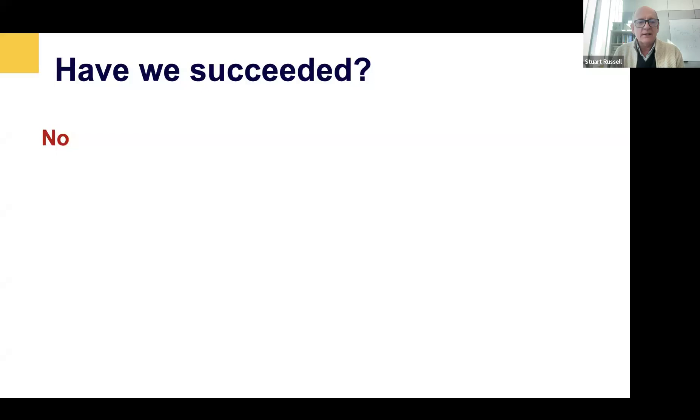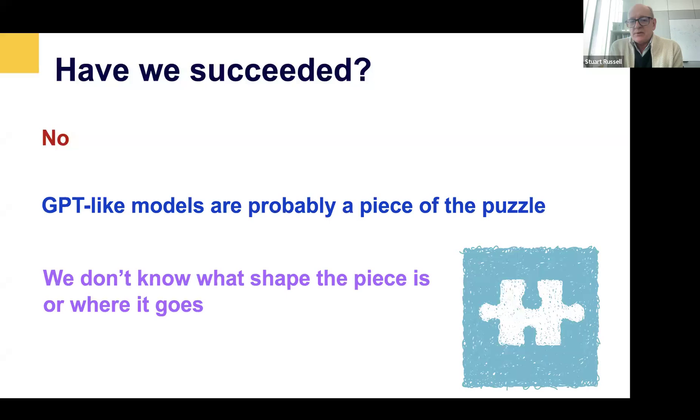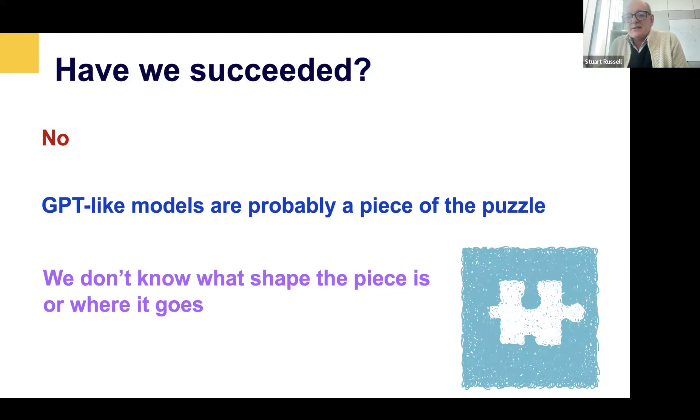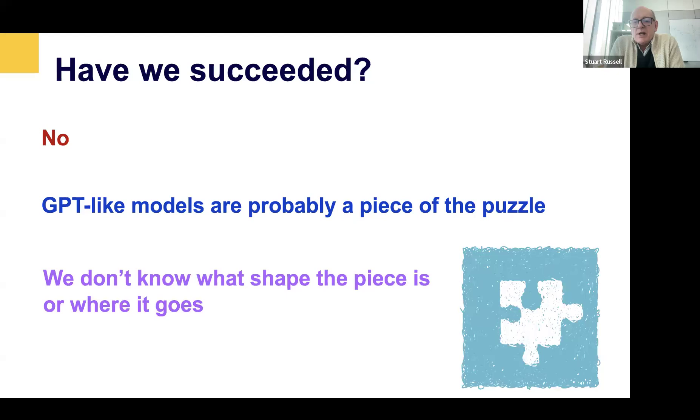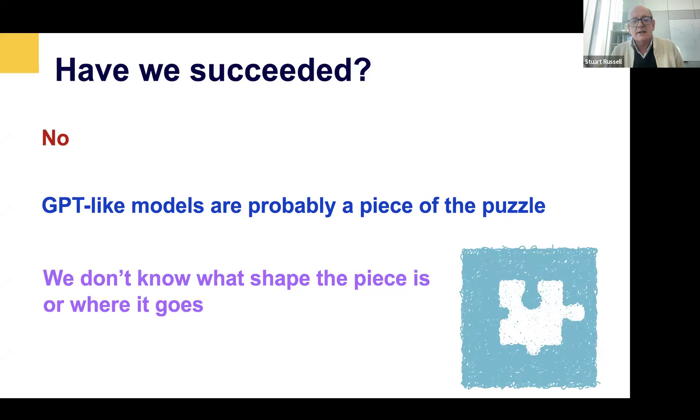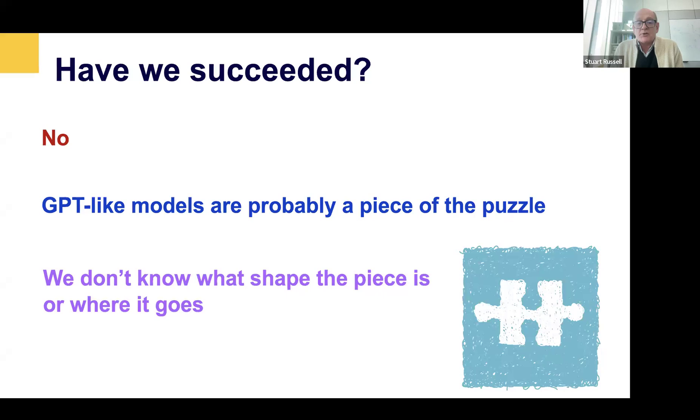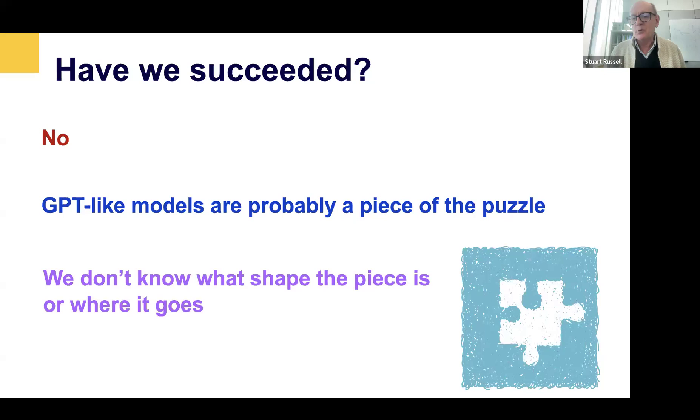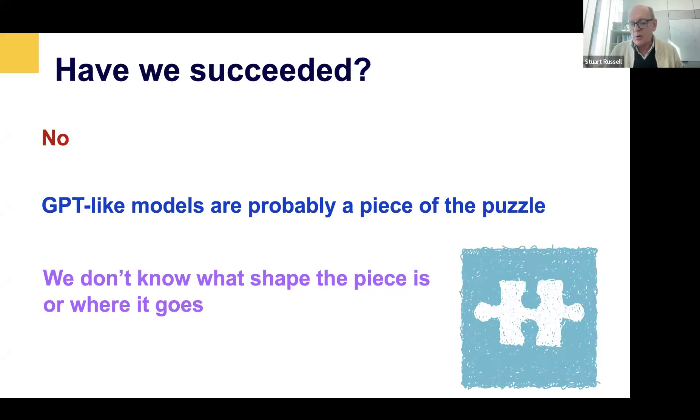And one question you might ask immediately is, have we succeeded? My view is that that's not the case. We have not succeeded. There are several basic conceptual breakthroughs that still have to happen before we achieve real general purpose AI. And the models that are so much in the news, the ChatGPT and all of its relatives, are certainly very interesting. And it may be that they will form a piece of the puzzle, but we don't know how they work.